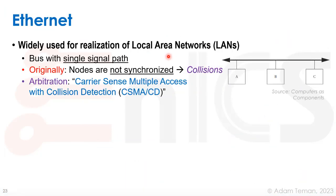Originally, Ethernet was invented as a type of bus with one single signal path, with many different components connected to it. The components were not synchronized, meaning A and B could transmit at the same time, causing a collision. To handle this, they would listen while sending — if a collision was detected, they'd wait a random time and retransmit. This was called CSMA/CD: Carrier Sense Multiple Access with Collision Detection.